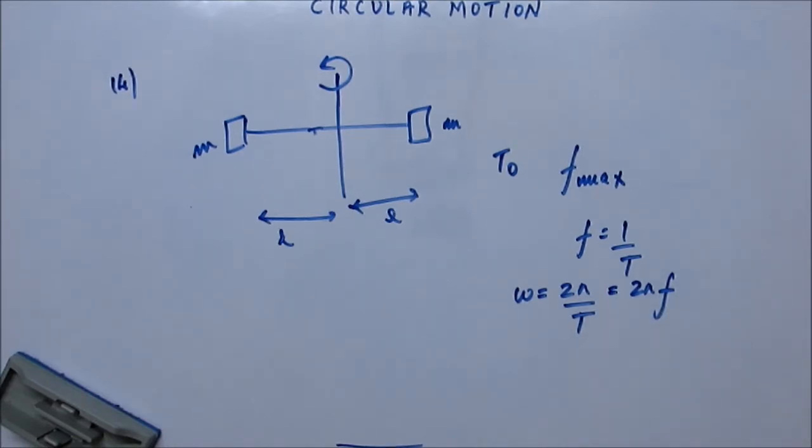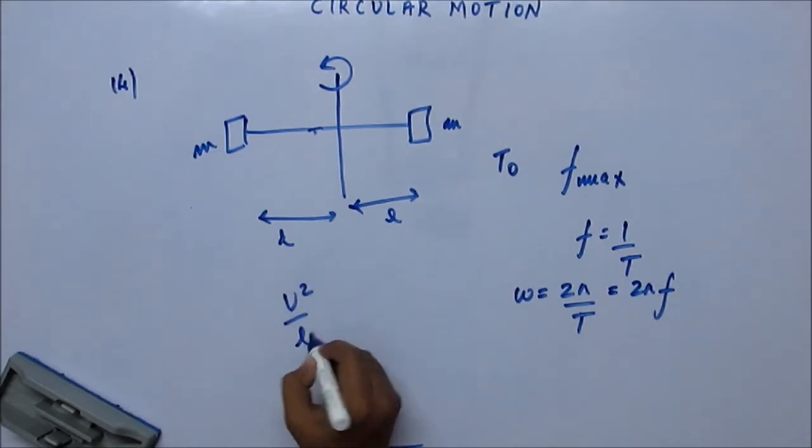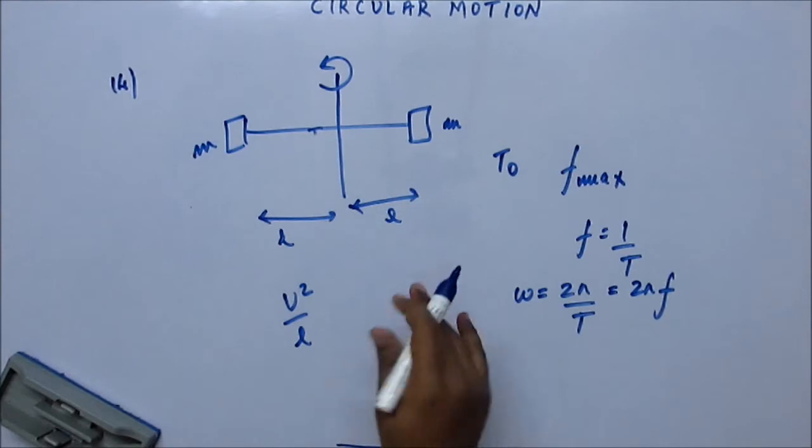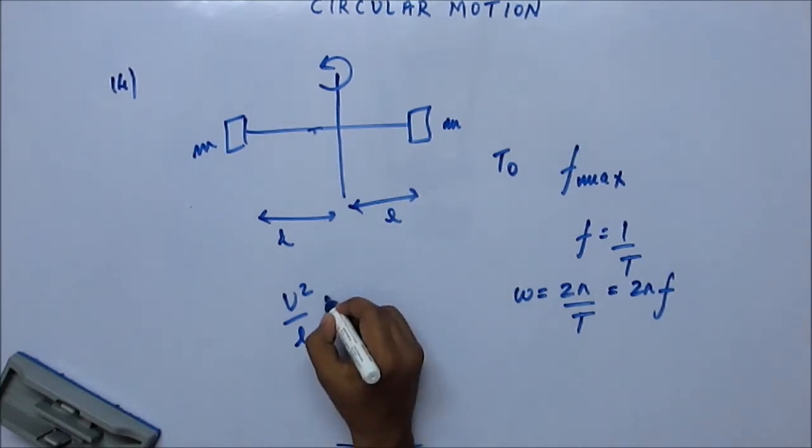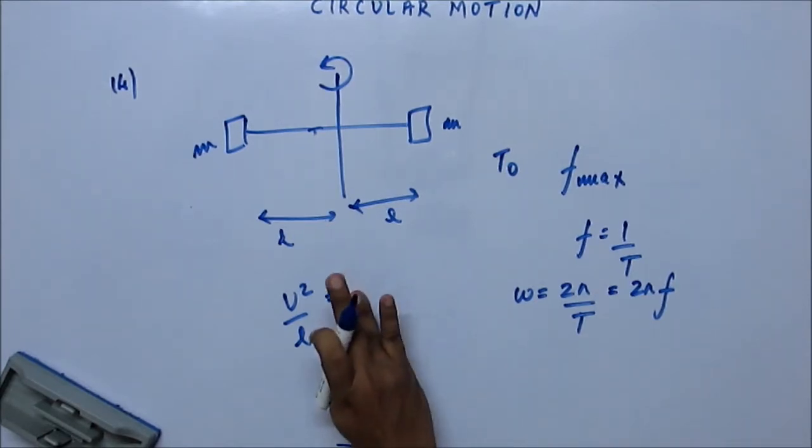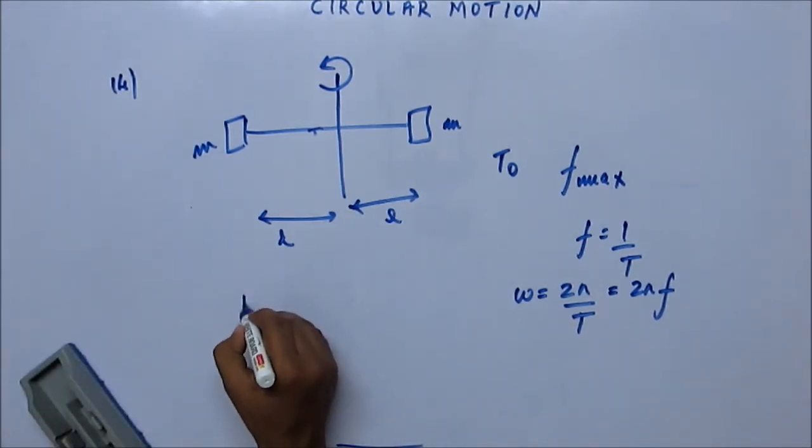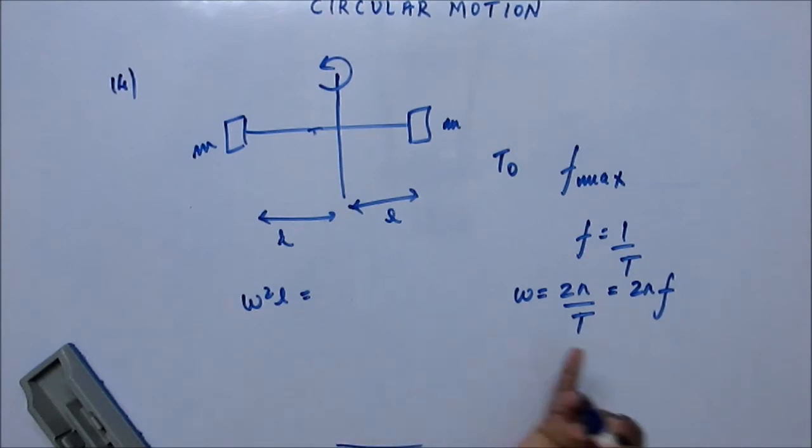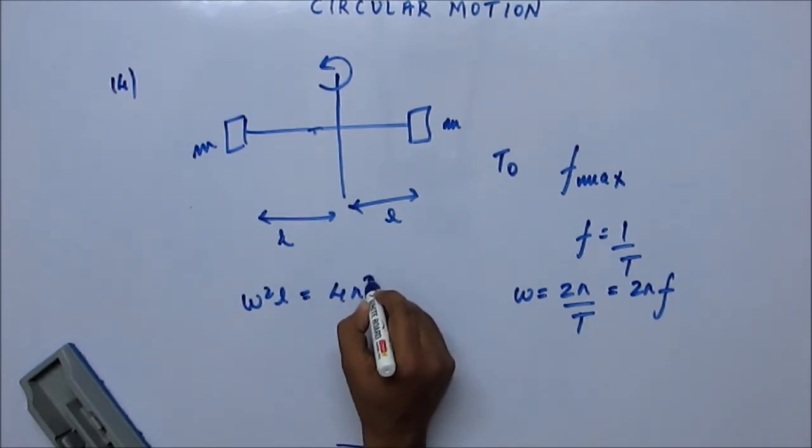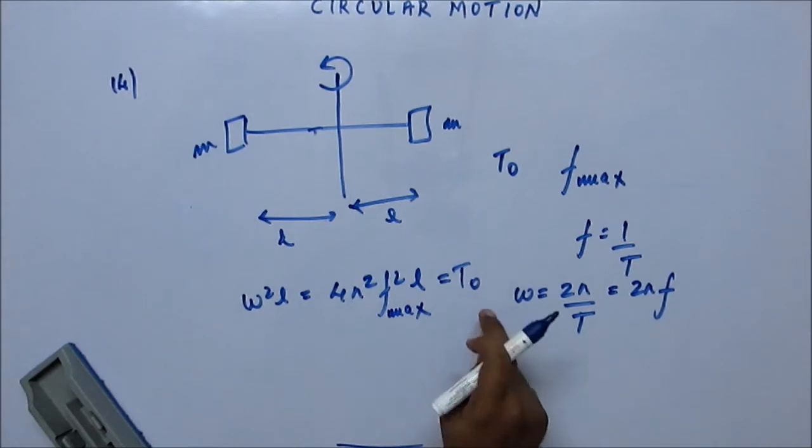Now v² upon R—in this case it is v² upon L because the radius of the circle for each mass is L. That equals the centripetal acceleration v² upon L, or you can write centripetal acceleration as omega² L. Now omega is 2πf, so we get 4π²f²L, and this must equal T0 because that is the breaking strength.